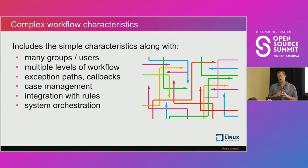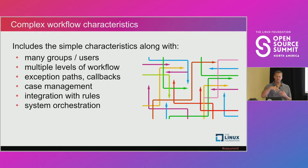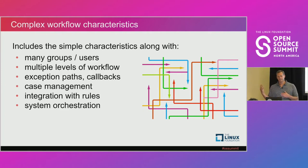Moving on to complex workflow — you start to see interaction across multiple groups and multiple divisions across the company. The workflows get more complex: you have multiple levels, exception paths, and callbacks where things need to route back. You can also see forms of case management where it's more investigative or research-based activities that aren't 100% predictable. You can also have integration with rules — if-then logic where you may have policies to execute, decision tables, or rules engines. And then system orchestration, where you orchestrate API calls in a particular order.